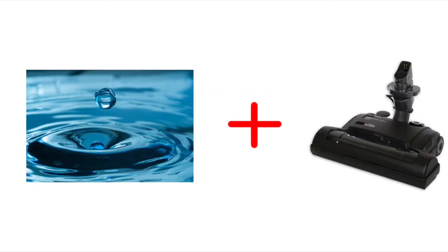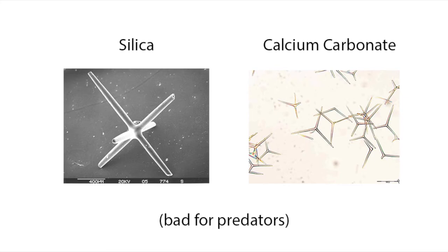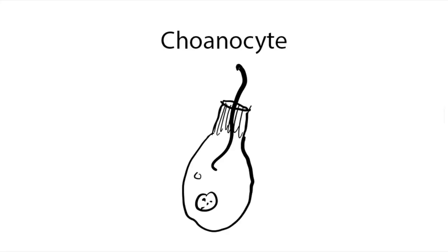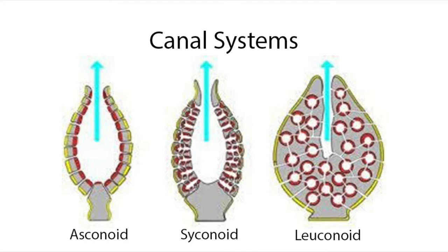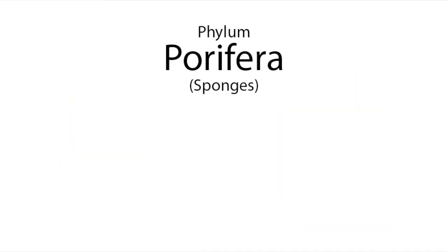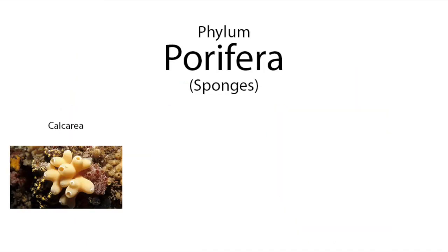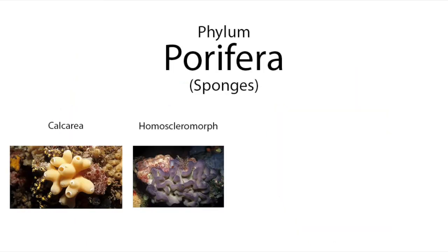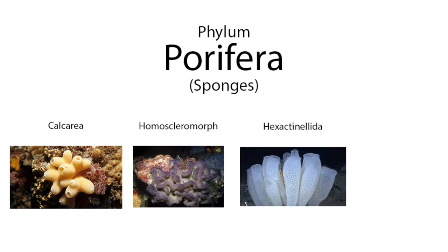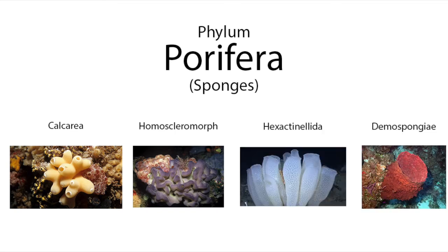First are the Porifera. Sponges practically exist as living vacuums. Their skeletons can be made of two materials, and they're powered by flagellated choanocyte cells that move water while removing the nutrients from it. They have a canal system that comes in a few different flavors, and like ice cream, most sponges tend to prefer one. There are four types of sponges: tiny calcareous sponges, deep-sea silicated glass sponges, large marine sponges, and the recently named homoscleromorphs.